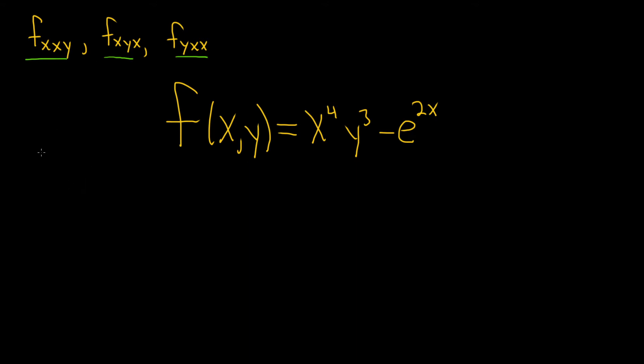So let's start by computing the partial with respect to x, so f_x. When you compute this, you treat all of the other variables as constants. So in this case, this y cubed is a constant, so it just hangs out. We simply take the derivative of x to the fourth, which is 4x cubed, and then this y cubed hangs out. Then minus, and as far as the derivative of e to the 2x, well, the derivative of e to the x is e to the x. So here we have to use the chain rule. So it'll be e to the 2x times the derivative of the inside function, which is just 2.